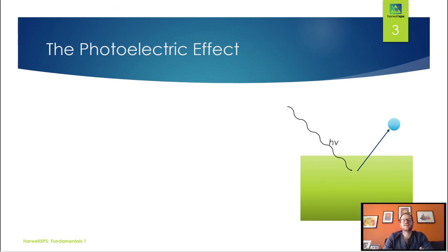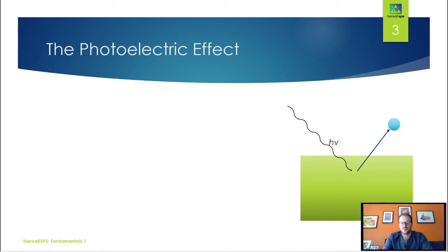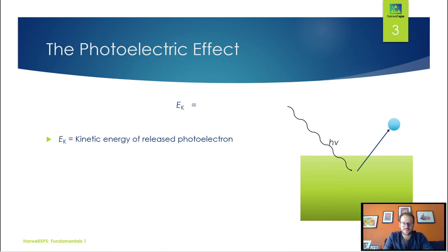So the photoelectric effect — you probably will have come across this before, but if not, don't worry, we're going to go through it all. This really comes from some observations made a very long time ago. Heinrich Hertz in the 1880s looked at some interactions with radiation and matter and noticed that under certain conditions, radiation could produce sparks in metals. This was later explained by Albert Einstein, who won his Nobel Prize for his work on the photoelectric effect.